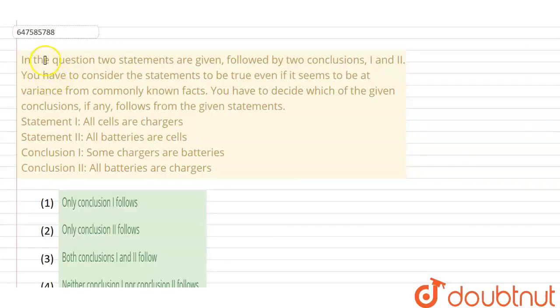Hello everyone, hope you are doing well. I am going to explain this question in this video. The question says that two statements are given followed by two conclusions, first and second. You have to consider the statement to be true even if it seems to be at variance from commonly known facts.